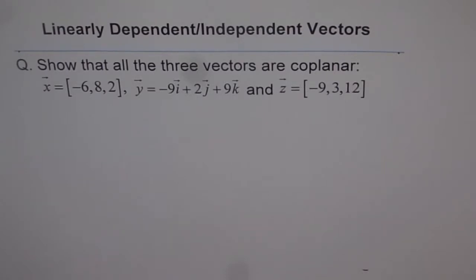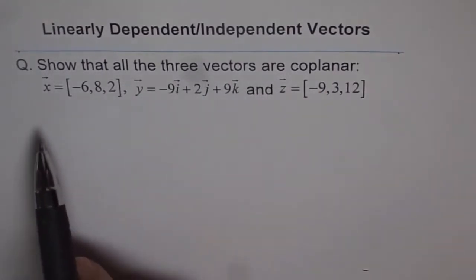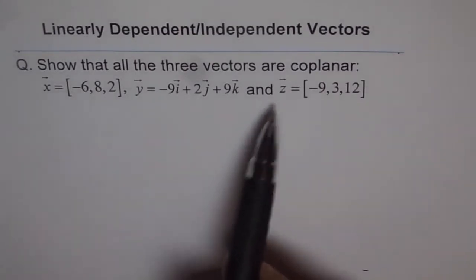Here we have a question which says show that all the three vectors are coplanar. So we are given three vectors here, x, y and z.